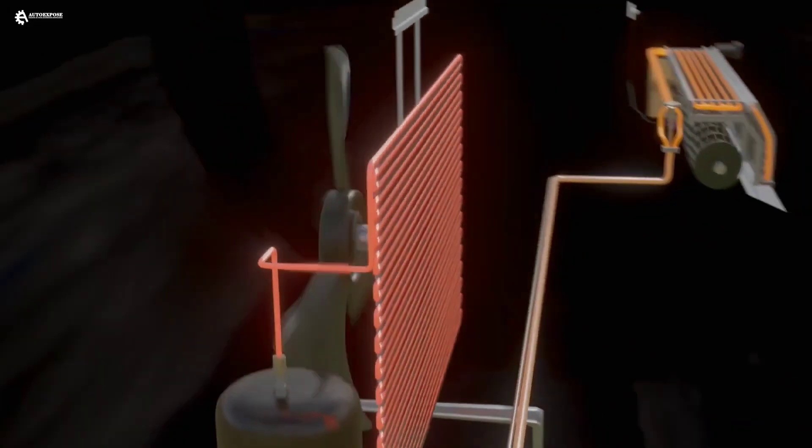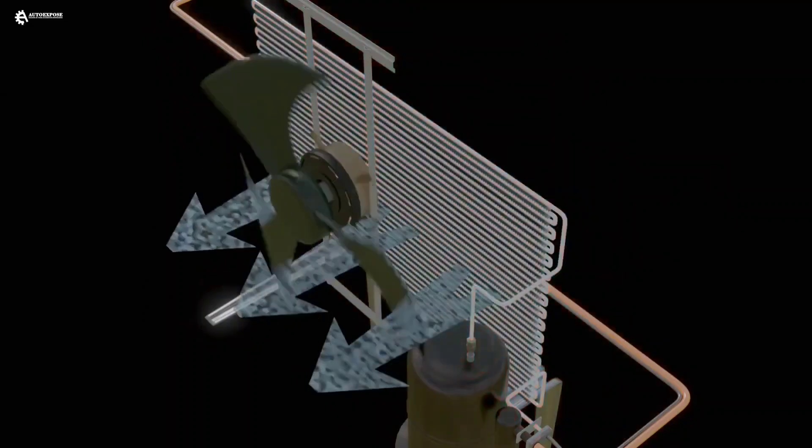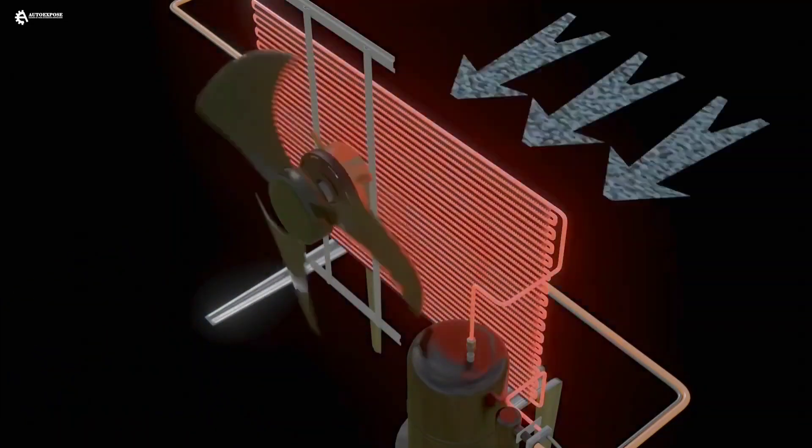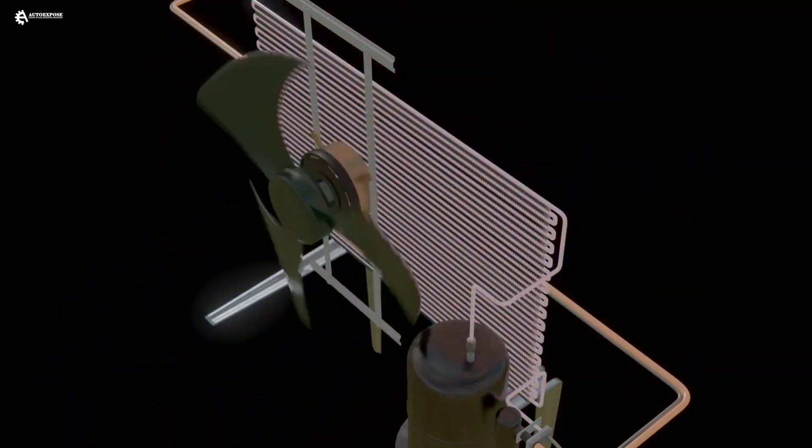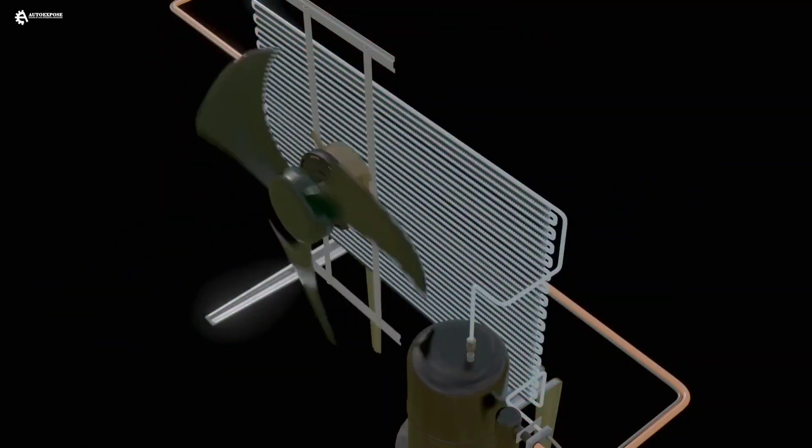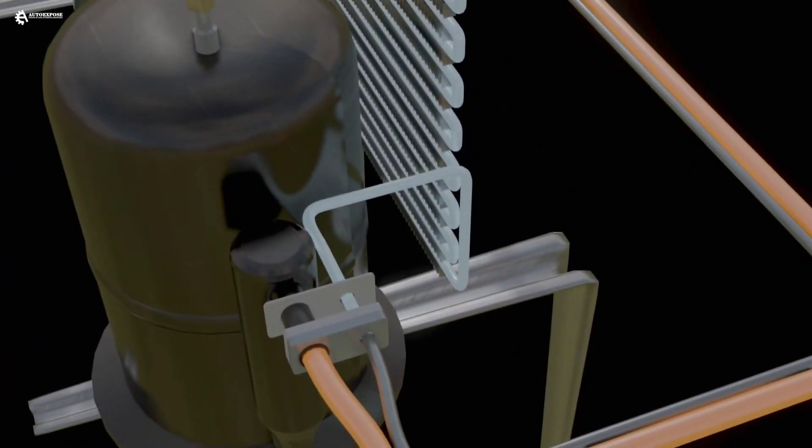Then, the freon is flowed to the condenser, where the freon is cooled and condensed back into liquid. In the condenser, the freon is divided into small channels, and the condenser fan turns on to suck air from the back of the unit through the condenser and out the front. This air helps lower the temperature of the freon, which then changes back into a liquid.